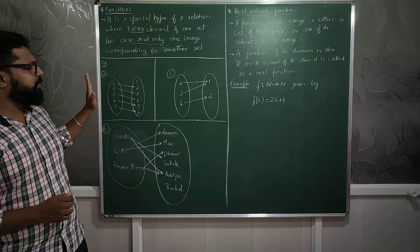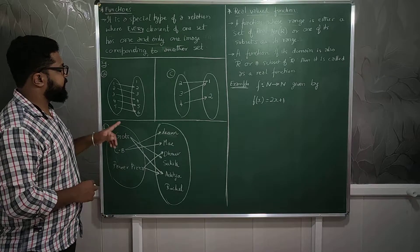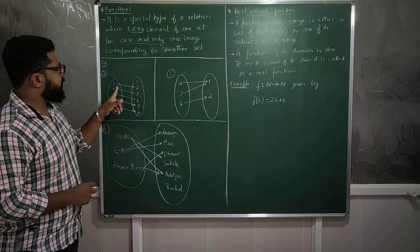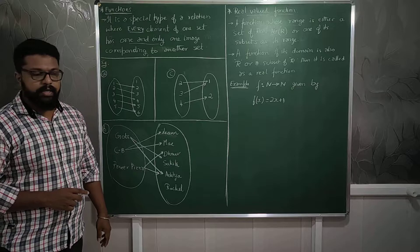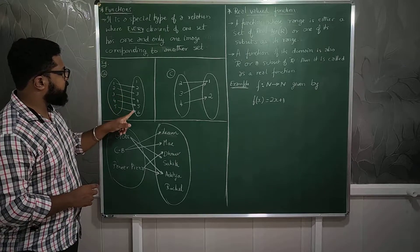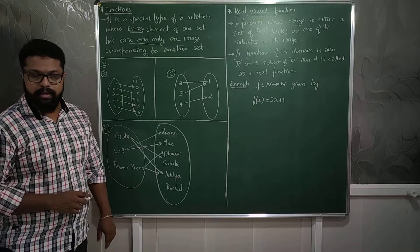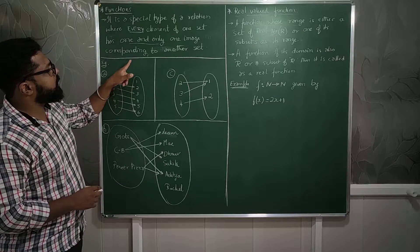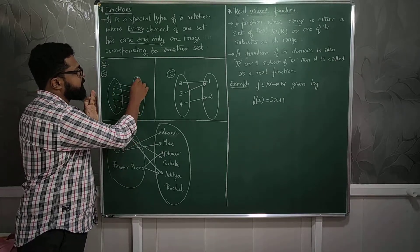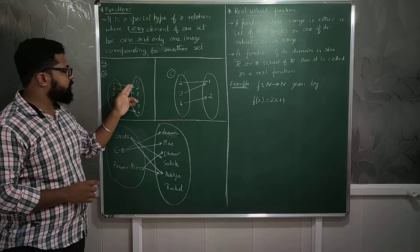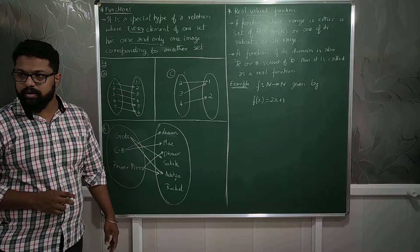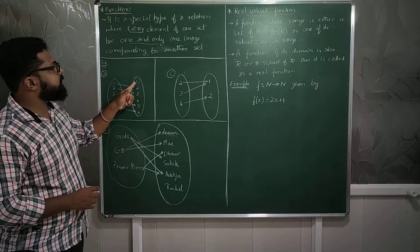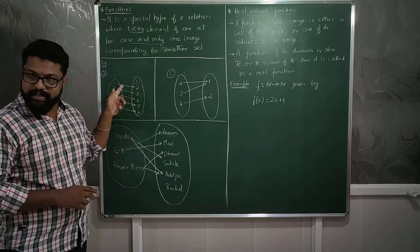To understand that, we will take an example, this example number one. Here, every element is having one image. Yes, every element is having one and only one image. But there is one extra element remaining which is not having an image on the other side.